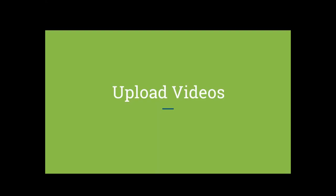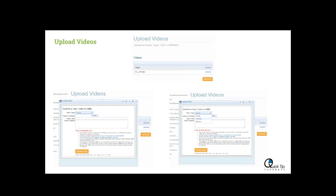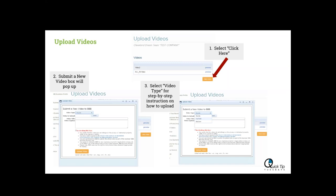Now let's go over uploading videos. Once you're on the main page of your business login, you just need to select Upload Videos. There are a few steps to upload videos, and you're going to start by selecting the Click Here button. Once you do that, this Upload Video box will pop up. When that box pops up, you're going to want to select the dropdown that says Video Type, and it's going to give you a few options of what type of video it is — whether it be YouTube, BizCam, or Ulio — and it's going to offer you step-by-step instructions on how to upload it.